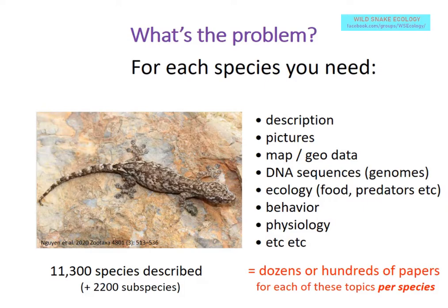From those 2,000 papers, we try to extract descriptions, pictures when published under Creative Commons, geographic distribution data, and links to DNA sequences in GenBank. We have some ecology data — diet information and predator information — plus a little on behavior, but we don't have much in ecology, behavior, and physiology. People interested in snake ecology will find those areas are currently quite sparse.